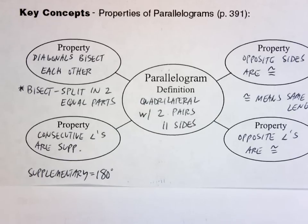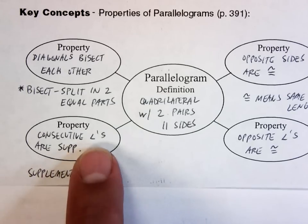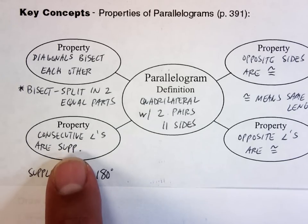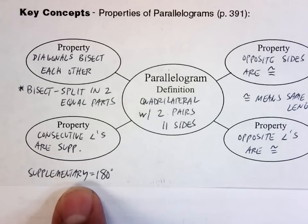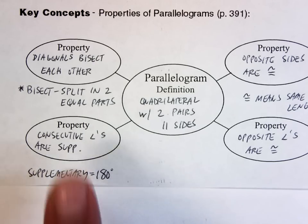Property number two. Consecutive angles are supplementary. Consecutive means two in a row. I'm not skipping an angle, but two angles, two in a row, are supplementary. Supplementary means they add up to 180 degrees. Consecutive angles add up to 180 degrees.